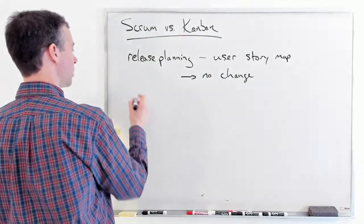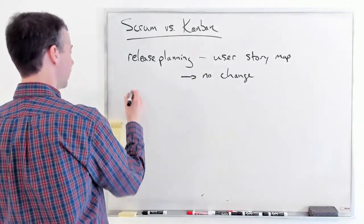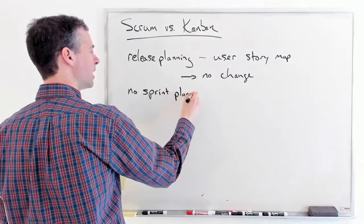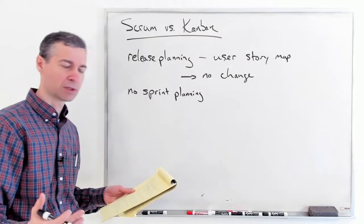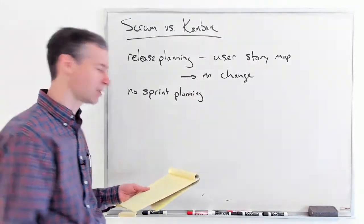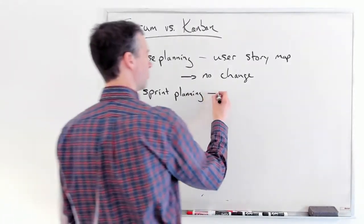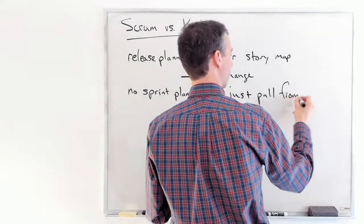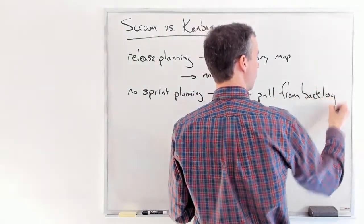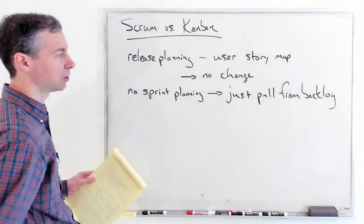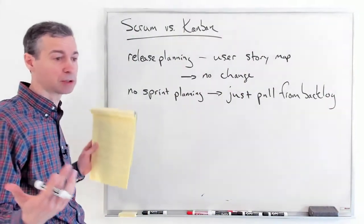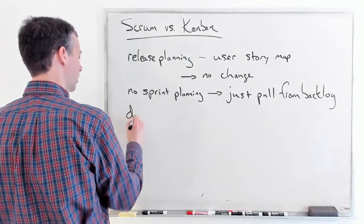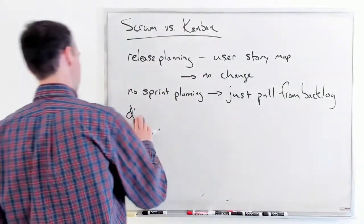What about sprint planning? Well, there are no sprints, so there's no more sprint planning. We don't need to do that work, which is actually a relief — it saves us some time. All we do now is pull from the backlog. When it's appropriate and we can do it within the work-in-progress limits, we pull. We don't need to plan the sprint because there's no sprint to plan anymore.